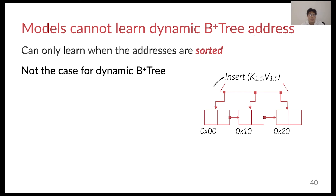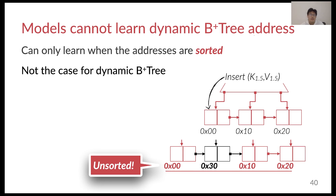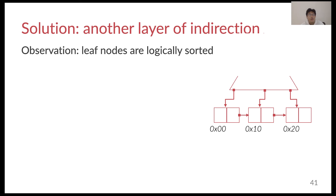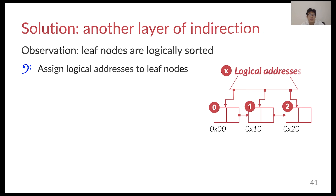For example, suppose we have a sample tree where its leaf node addresses are sorted. Suppose we want to insert a new key, say k1.5. After the insertion, the new leaf node's address will break the original sorted order of all the leaf node addresses. To resolve this issue, we observe that leaf nodes are logically sorted. Thus, we can assign sorted logical addresses, which can be effectively learned by the models, to leaf nodes.